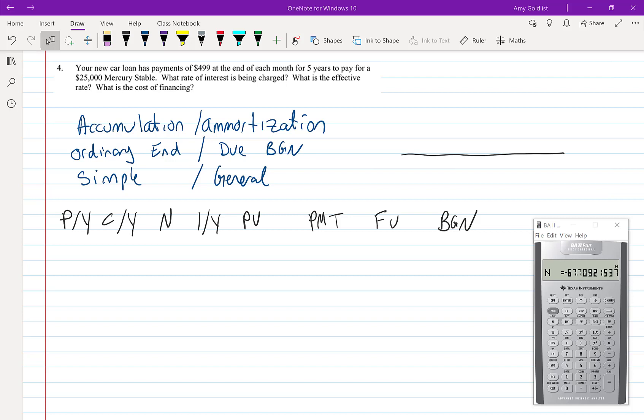Example four: Your new car loan has payments of $499 at the end of each month for five years to pay for a $25,000 car. What rate of interest is being charged? What is the effective rate? What is the cost of financing?